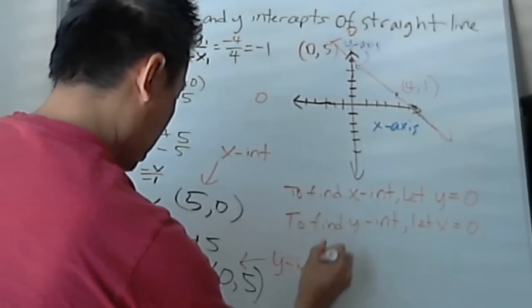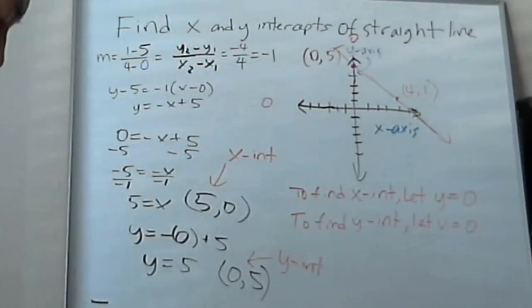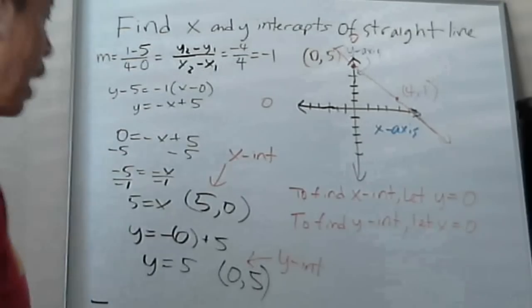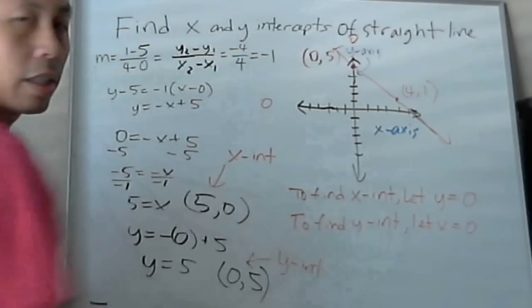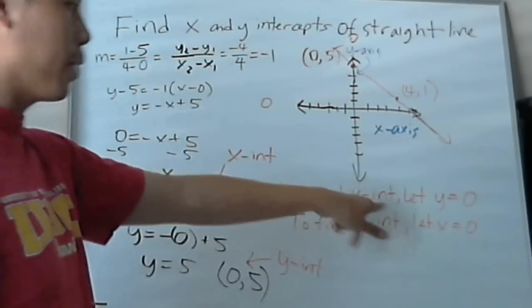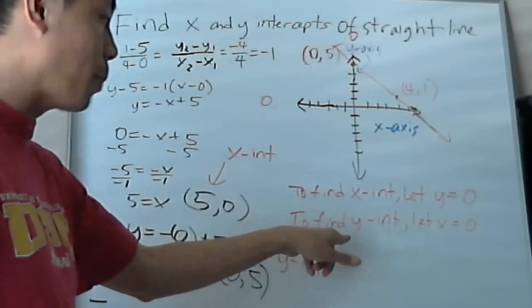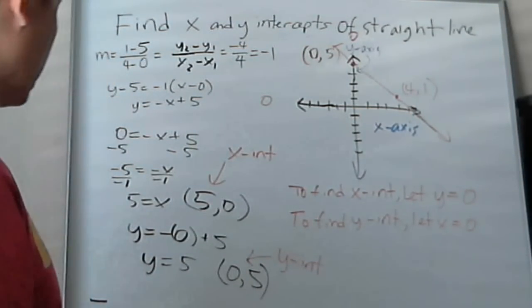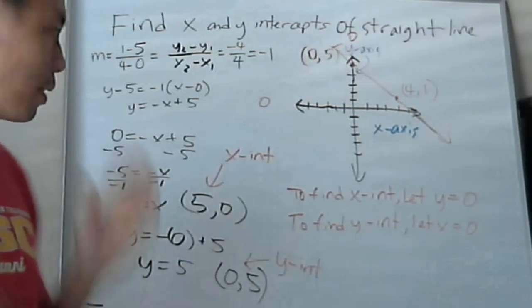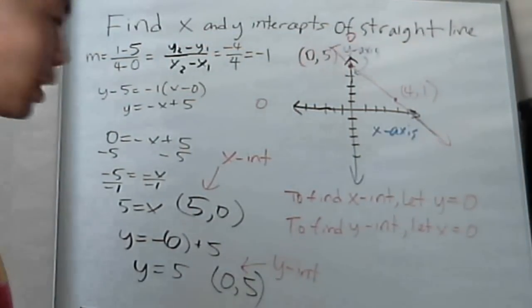Okay, and that's how you find it. So just a little review: if you need to find the x-intercept, you let y equal to 0. When you want to find the y-intercept, you let x be 0. And that's all it is, it's not very difficult. Thank you.